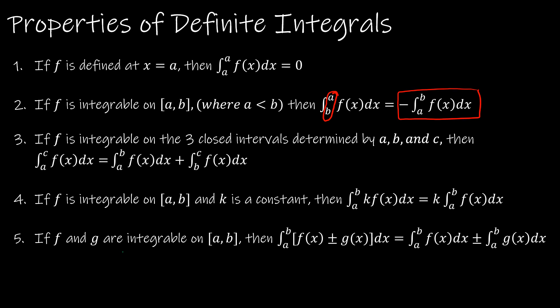Property 3: if f is integrable on the three closed intervals determined by a, b, and c, then the integral from a to c equals the integral from a to b plus the integral from b to c. You can split a region into two distinct shapes and add their areas. Property 4: a constant can always be brought out to the front of an integral. Property 5: the integral of a sum of two functions can be split into the sum of their individual integrals.